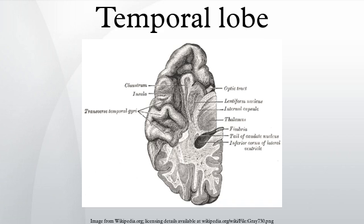The temporal lobe is one of the four major lobes of the cerebral cortex in the brain of mammals. The temporal lobe is located beneath the lateral fissure on both cerebral hemispheres of the mammalian brain.